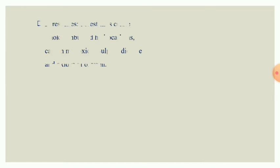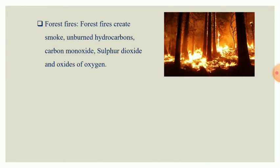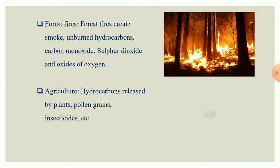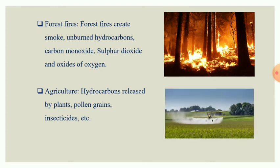The next cause is forest fires. Forest fires create smoke, unburned hydrocarbons, carbon monoxide, sulfur dioxide, and oxides of nitrogen. Forest fires can be either natural or man-made. The next cause is agriculture. Hydrocarbons are released by plants, pollen grains, insecticides, etc. More pollution will rise when we burn agricultural wastes. So the causes of air pollution are gases emitted by industries and automobiles, forest fires, and burning of agricultural wastes.